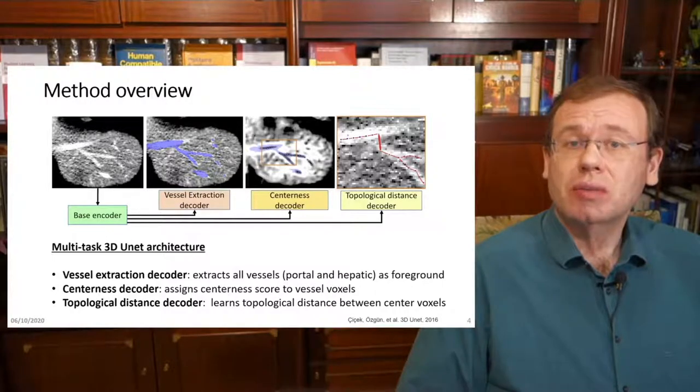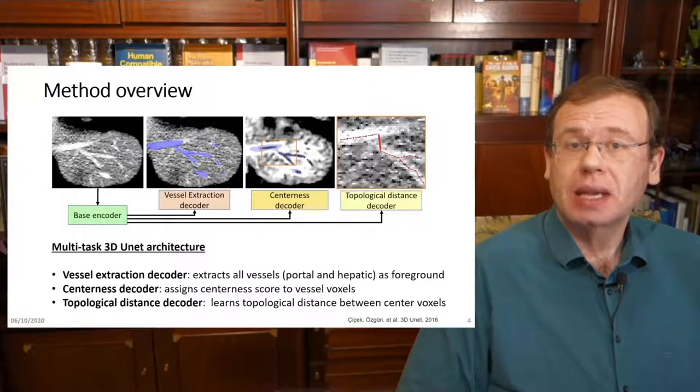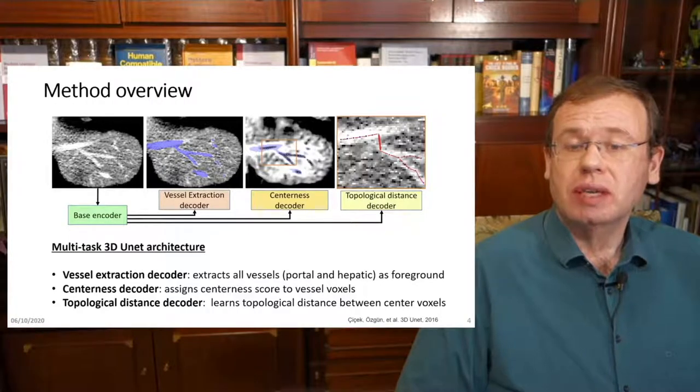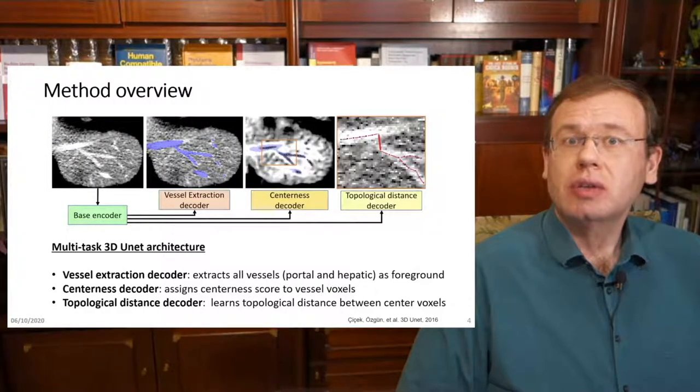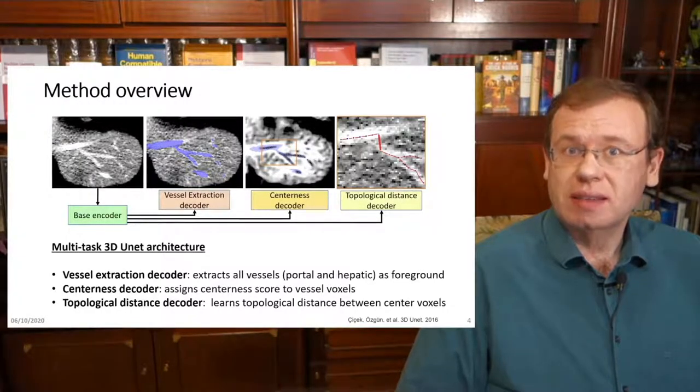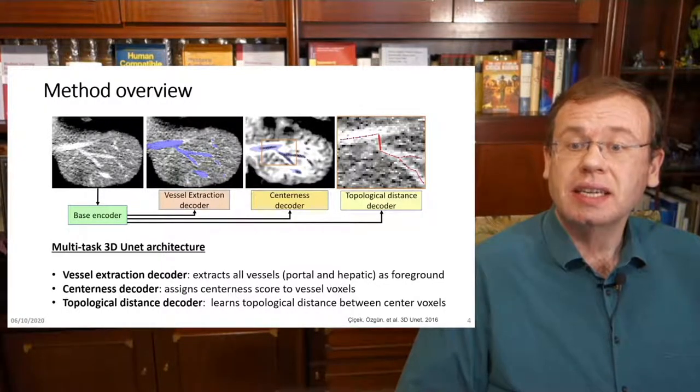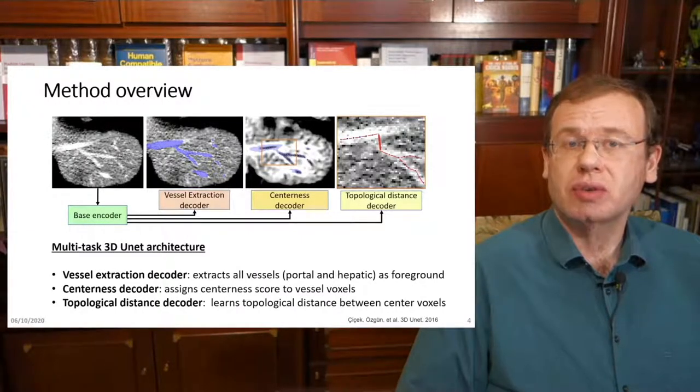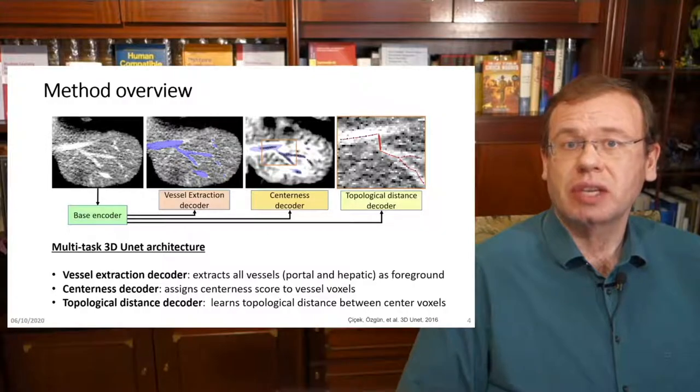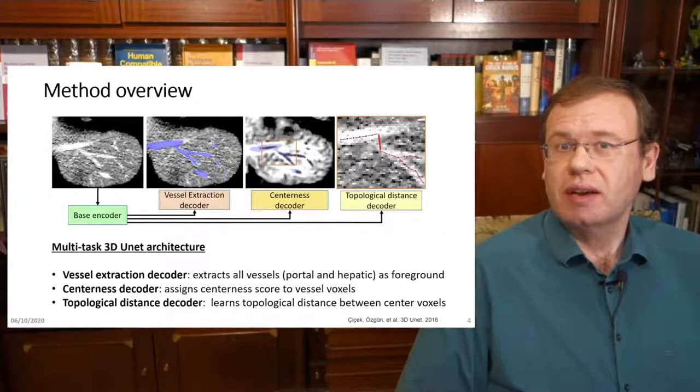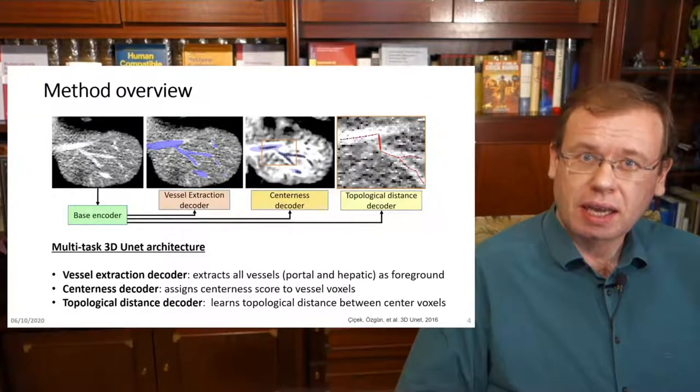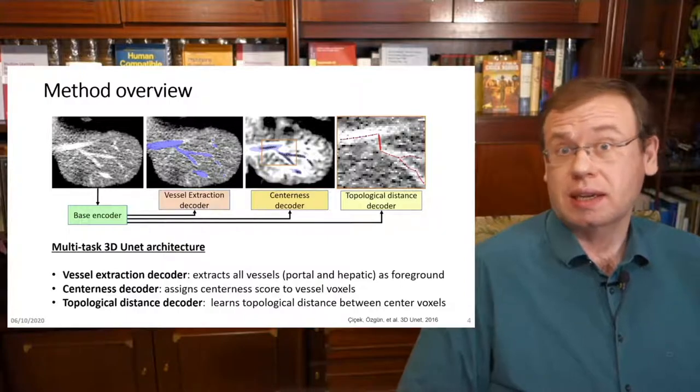And they are also predicting this then on a voxel basis. The interesting thing is now that you can use the respective outputs, in particular the centeredness decoder, to then highlight where the actual vessels are. So you can then extract center lines from this information. And then you use the topological distance in order to build the final vessel trees. And you can use this information to build much better and much more consistent vessel trees. It's a very interesting paper. I can absolutely recommend to have a look at that. I really like this idea.